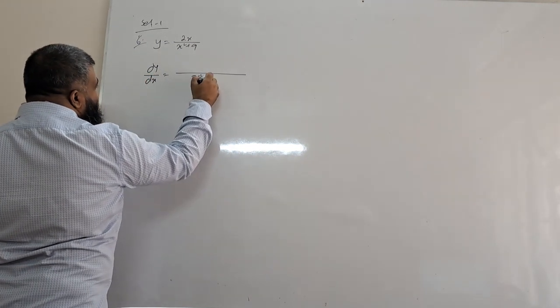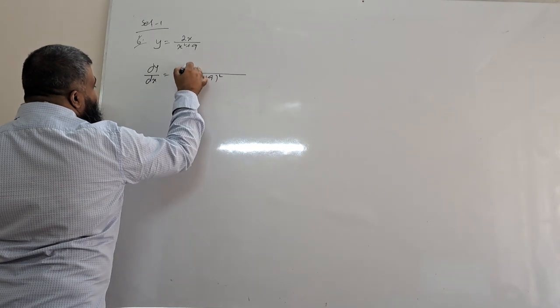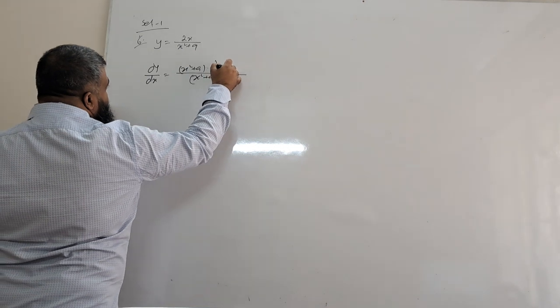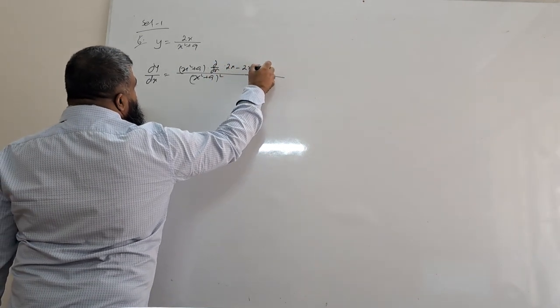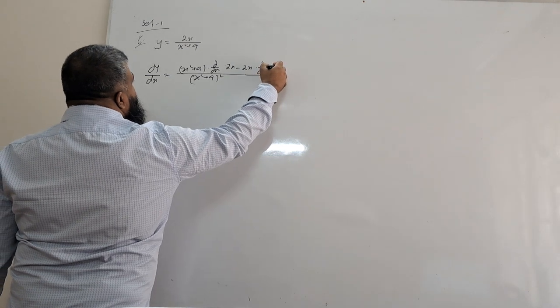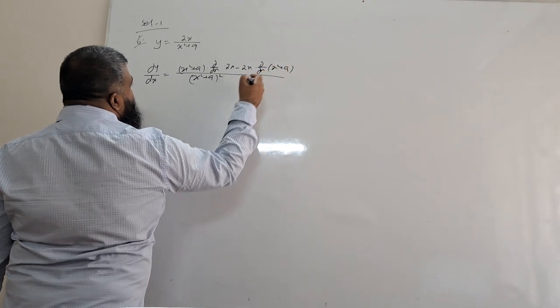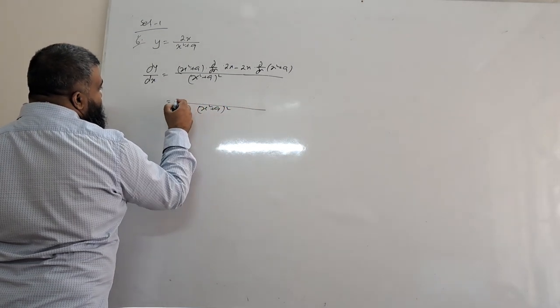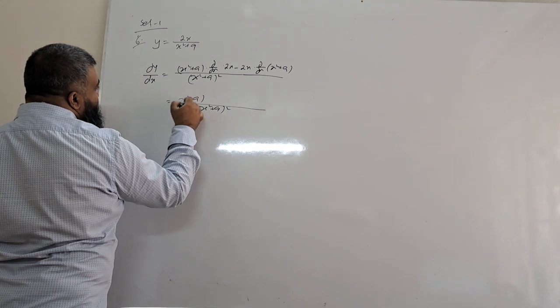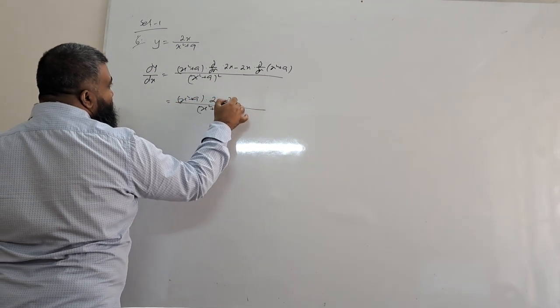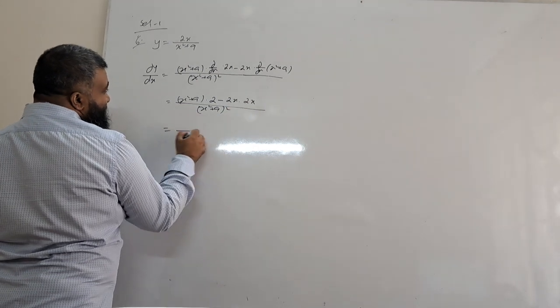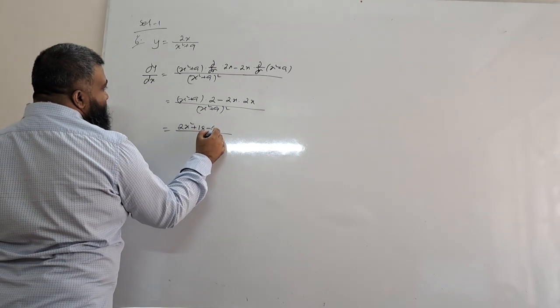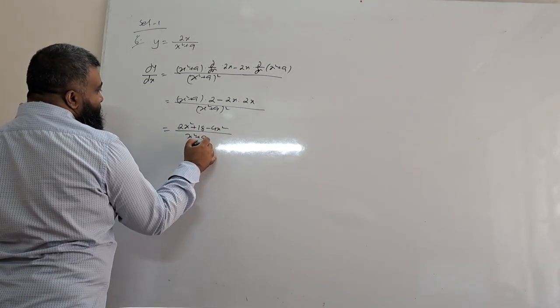Using quotient rule: v(du/dx) minus u(dv/dx) over v². So we have (x² + 9) times derivative of 2x minus 2x times derivative of (x² + 9), all over (x² + 9)².